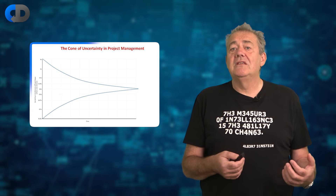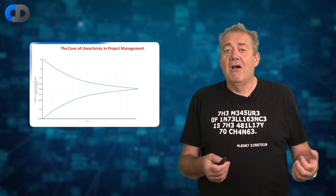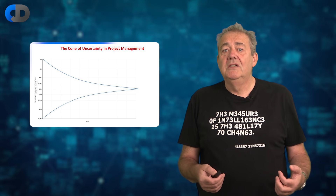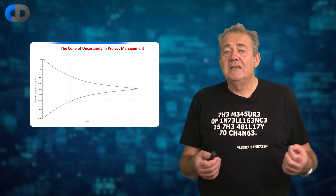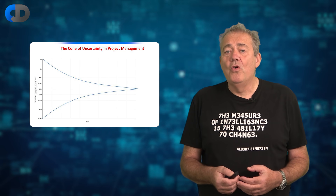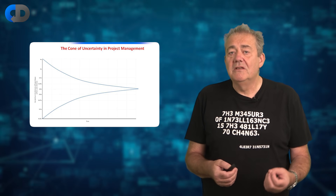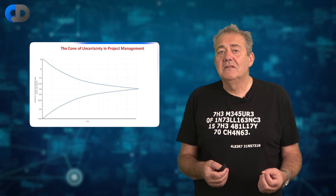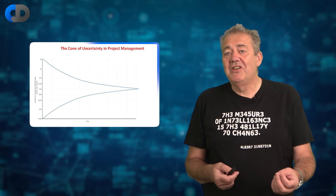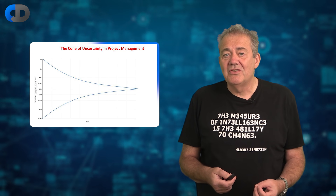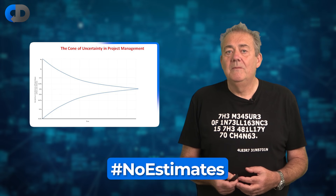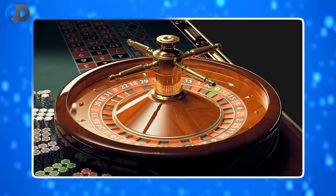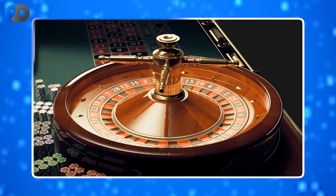In software estimation the error bars are huge. At the start of a project, research says estimates are out by a factor of four — four times your estimate — which actually calls much estimation into question altogether. Hence the no-estimates movement. So working to increase precision is completely the wrong thing to aim for.